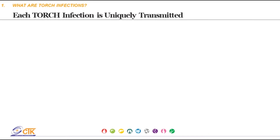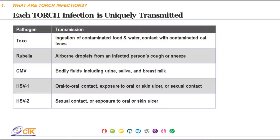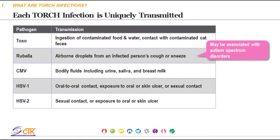Understanding each TORCH infection's unique method of transmission helps identify precautionary measures. With Toxoplasmosis, or Toxo, transmission is primarily through ingestion of contaminated food and water, or by exposure to contaminated cat fecal matter. Rubella is transmitted by airborne droplets from an infected individual. It's important to note that previous studies have linked rubella to autism spectrum disorders.